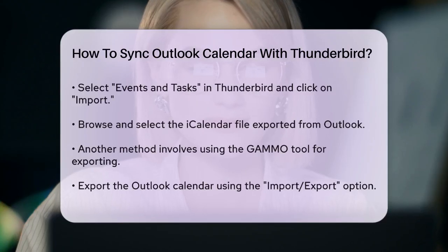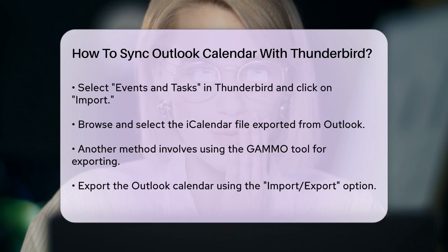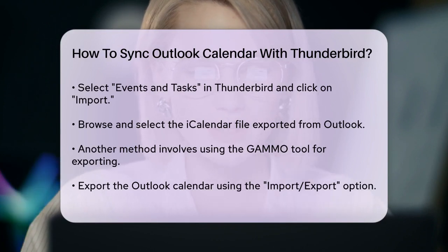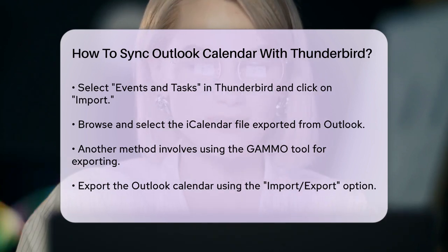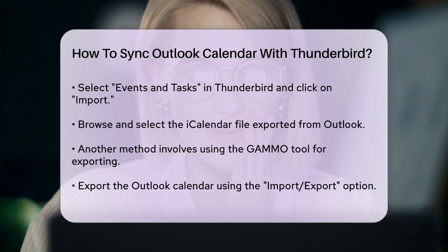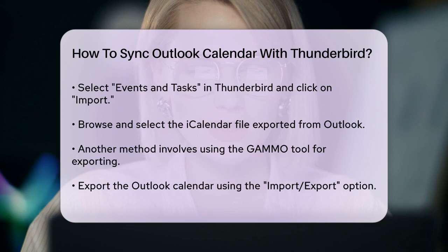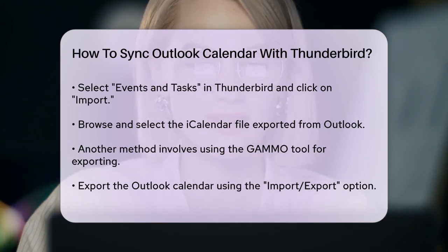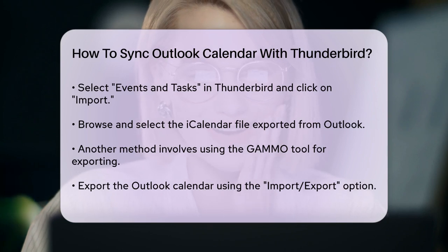Another method involves using a tool like Gammo. To do this, export your Outlook calendar by going to the File tab, selecting Open and Export, then Import/Export, and choosing Export to a File. Select OutlookDataFile.pst and choose your calendar. Save the file to a preferred location. Then launch the Gammo tool, add the calendar file, preview the items, and choose the folder to export. Select the ICS file format and save the file to your desired location.